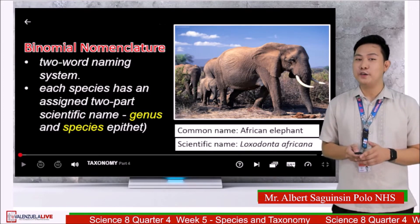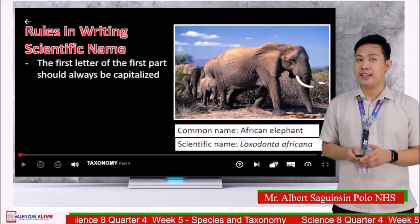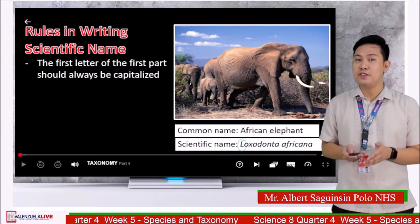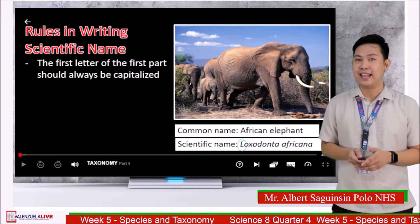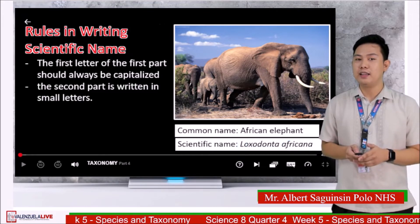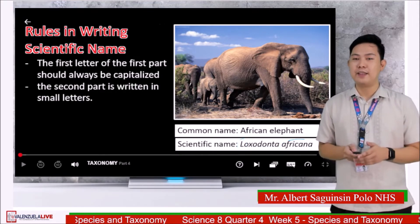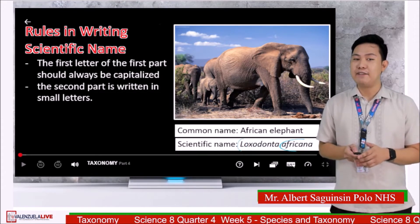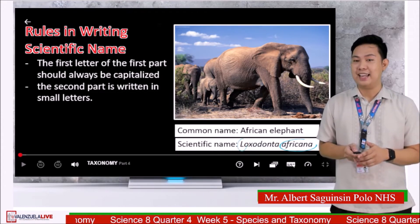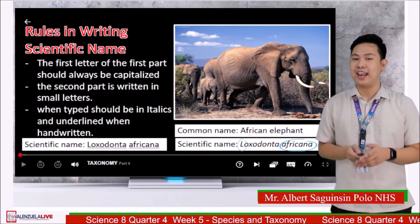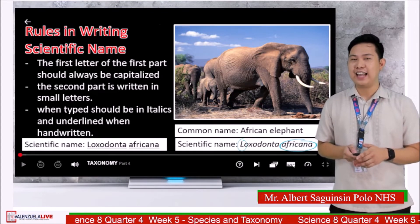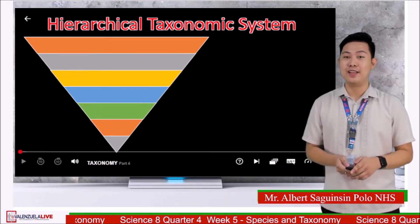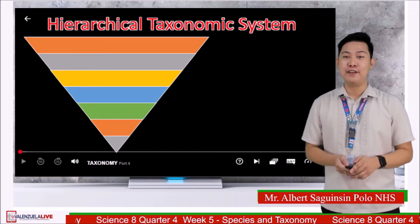There are rules in writing scientific names. The first letter of the first part — the genus — should always be capitalized. The second part, the species epithet, is always written in small letters. Remember that scientific names are always italicized, and when handwritten they should be underlined.